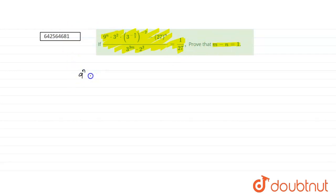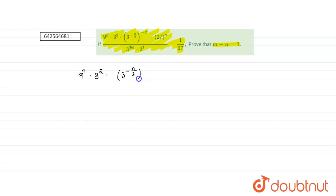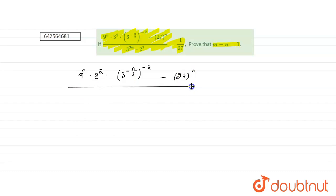9 to the power n, into 3 squared, into 3 to the power n minus 2, then 3 to the power negative n by 2 whole power negative 2, minus 27 to the power n, divided by 3 to the power 3m into 2 cubed, is equals to 1 by 27.